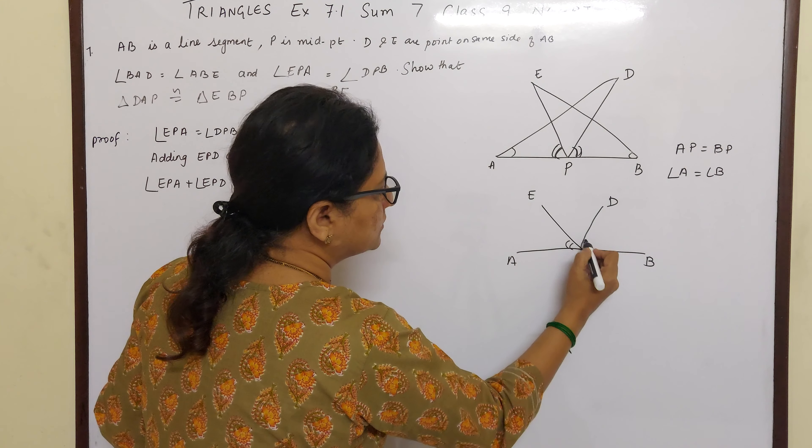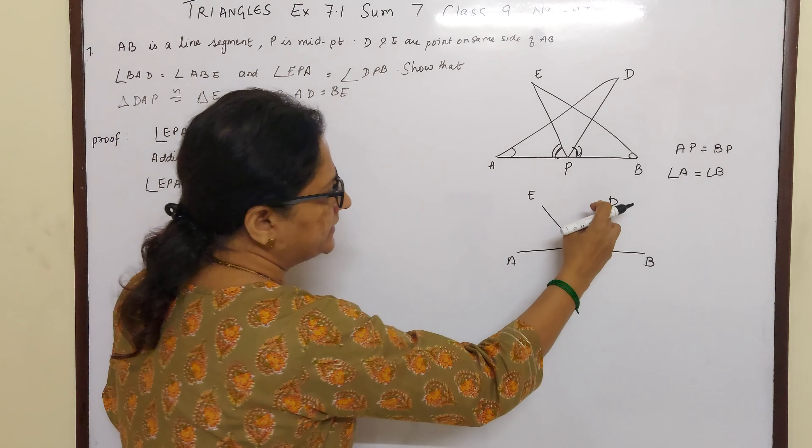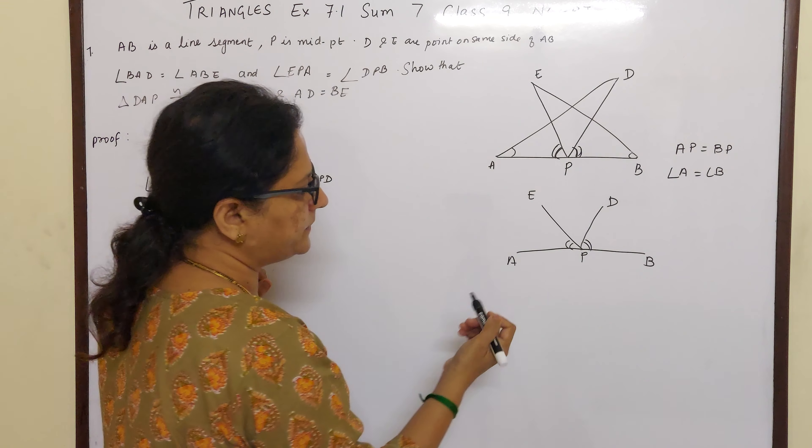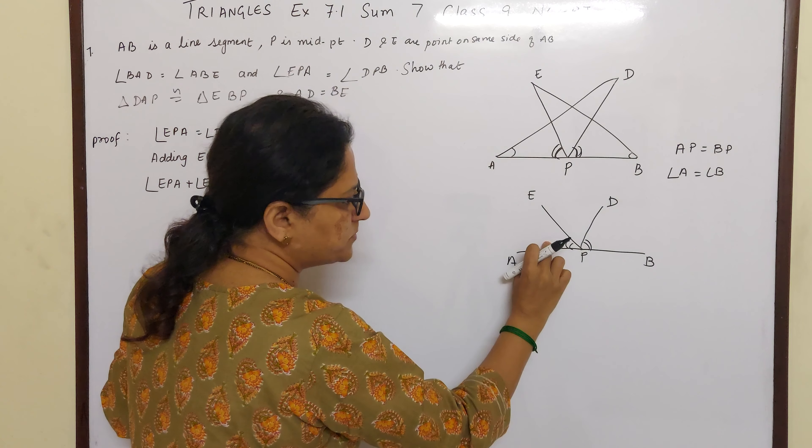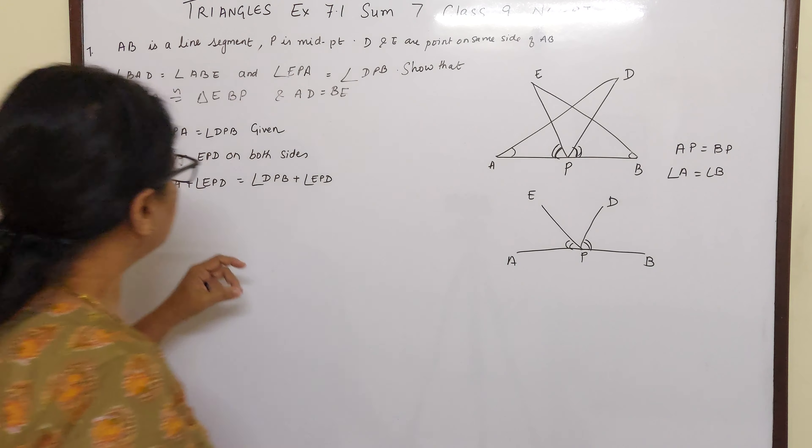Now if this is equal to this, we have to prove triangle DAP is equal to triangle EBP. Now how will I get DAP, children? I need DAP. How will I get DAP? If I add this EPD, which is extra, to this part, I will get DAP. So this EPA is already given equal to DPB.